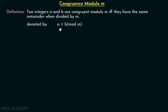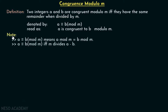This is denoted by A congruent to B modulo M, which can be read as 'A is congruent to B modulo M.' Please note that A is congruent to B modulo M means A mod M equals B mod M. According to the definition, they have the same remainder when divided by M, which means A mod M must equal B mod M.